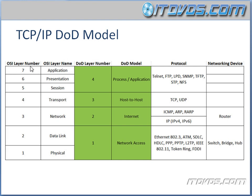We've got our OSI layers 7 through 1: application, presentation, session, transport, network, data link, and physical. So that was a 7-layer model. The DOD model is actually a 4-layer model, so it just condenses a couple of layers.